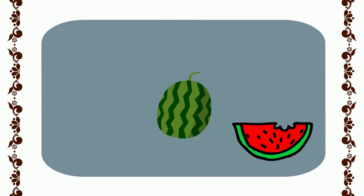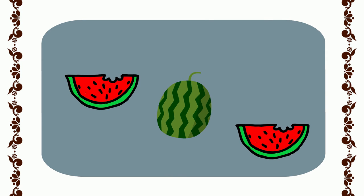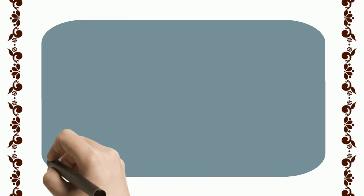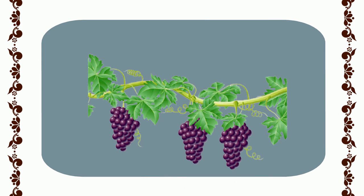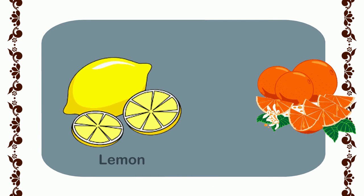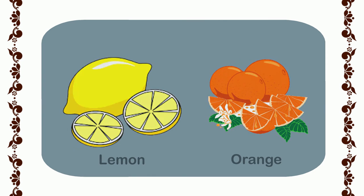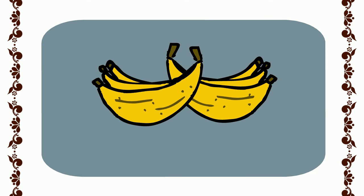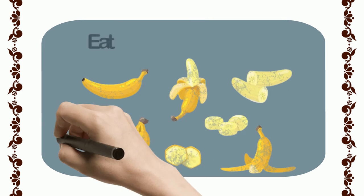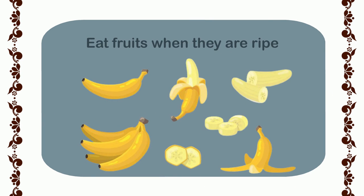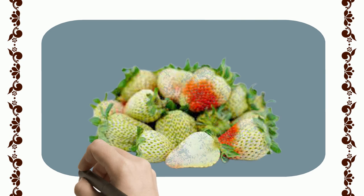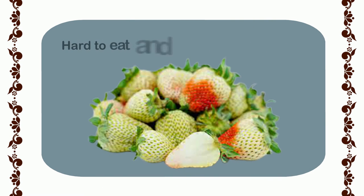There are many types of fruits with different shapes, sizes, colors, and taste. Some are very large and heavy like watermelon, some are very small and grow in bunches like grapes. Some are sour like lemon and orange, while some are sweet like banana. We mostly eat fruits when they are ripe. Unripe fruits are often hard to eat and digest and are bitter in taste.